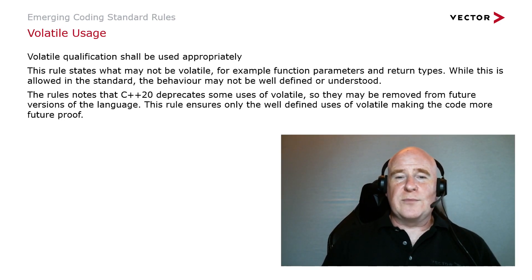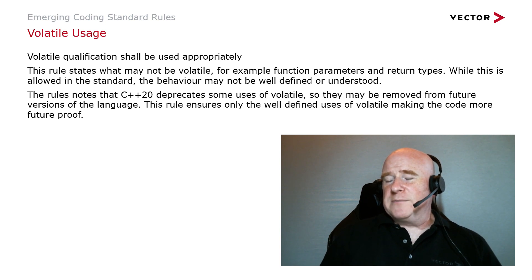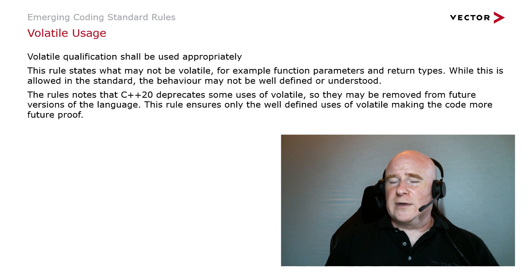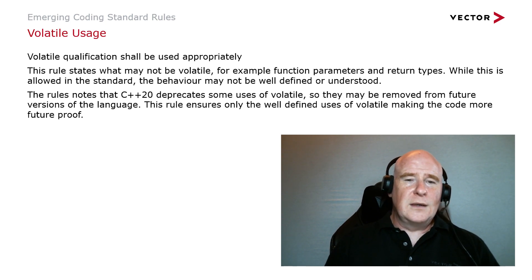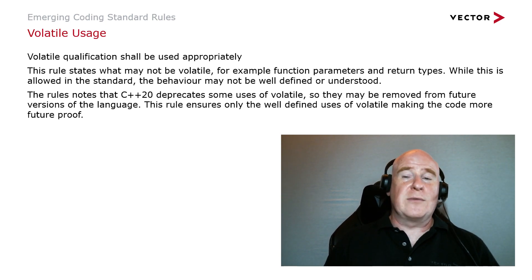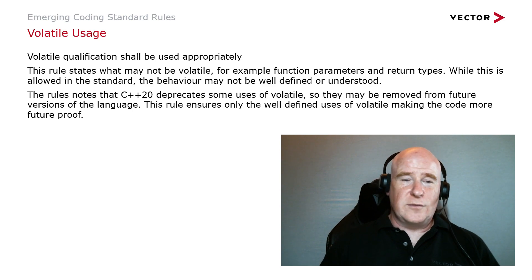Volatile qualifications shall be used appropriately. The rule says what may not be volatile — for example, function parameters and return types. While this is permitted by the language standard, the behavior may not be well-defined or understood. The rule also notes that in C++20, the use of volatile in some cases is deprecated and may be removed from future versions of the language. So this rule ensures not only the well-defined uses of volatile, but also makes the code future-proof.